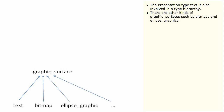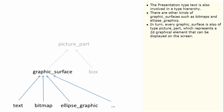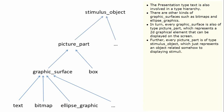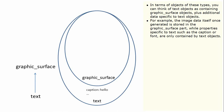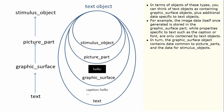The presentation type text is also involved in a type hierarchy. There are other types of graphic surfaces such as bitmaps and ellipse graphics. In turn, every graphic surface is also of type picture part, which represents a 2D graphical element that can be displayed on the screen. Further, every picture part is of type stimulus object, which represents an object related somehow to displaying stimuli. The graphic surface object contains data common to picture parts and the data for stimulus objects.